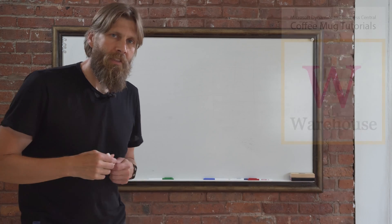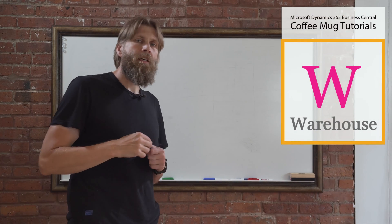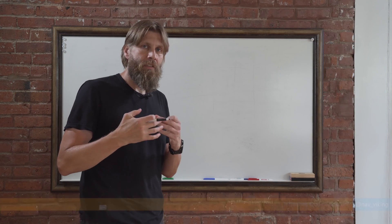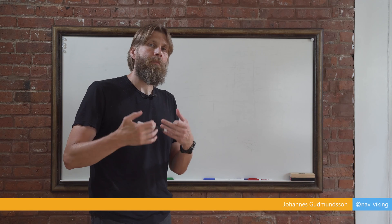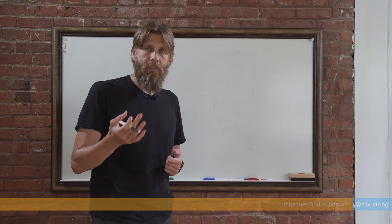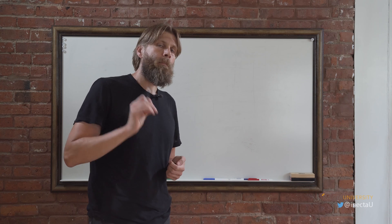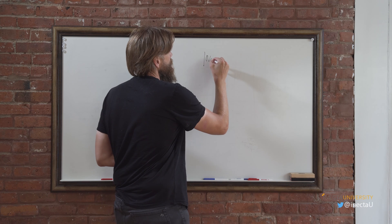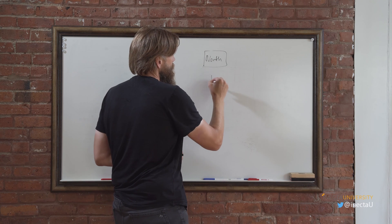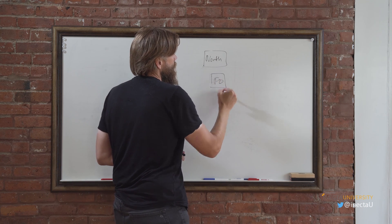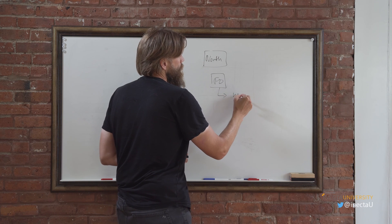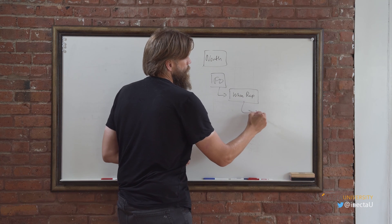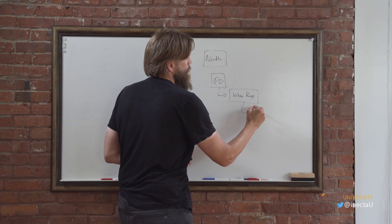Hey guys, we're going to keep going on warehouse management and today we're going to talk about the put-away template. I touched on it a little bit last time. We did introduce bins into the system. We created a receipt from a purchase order and a put-away. Basically what we had, for the north location, we created a PO which creates a warehouse receipt which creates a put-away — call it SPA.